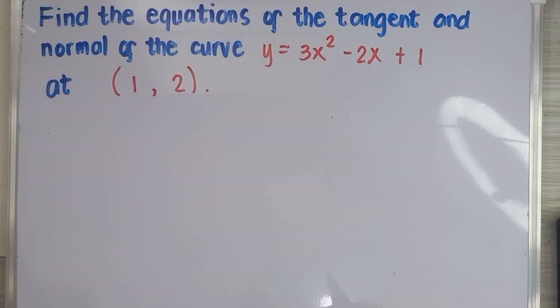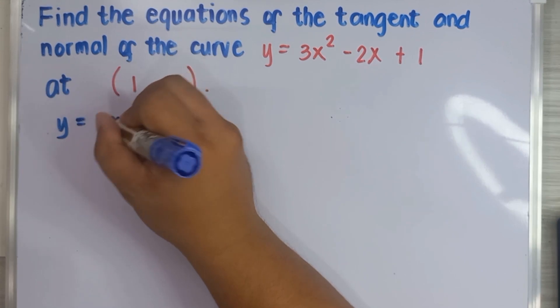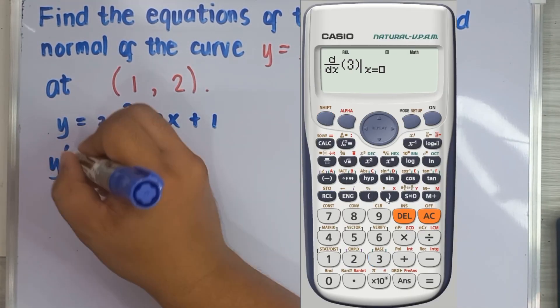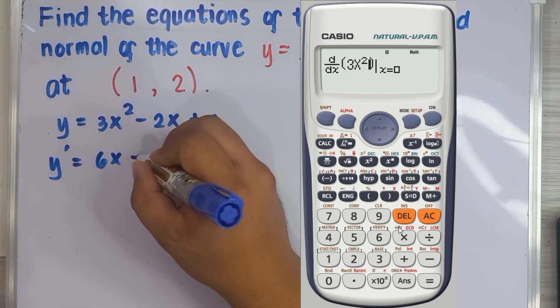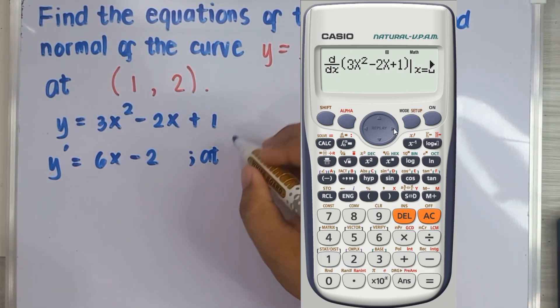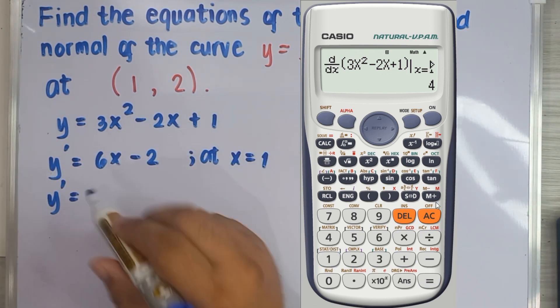Let's proceed to our first problem: to solve for the equations of the tangent and normal of the given curve y = 3x² - 2x + 1 at point (1, 2). Derive the equation and get the value of the slope at x equals 1. And this slope is also the value of the slope of tangent, which is 4.